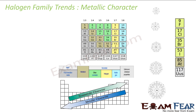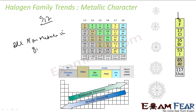Let's talk about the metallic character — this is the general trend. All elements in group 17 are non-metals. But if you talk about the non-metallic character, there is a decrease in non-metallic character as you go down the group. Metal is defined as one which gives electrons — for example, sodium. Non-metal is one which accepts electrons.